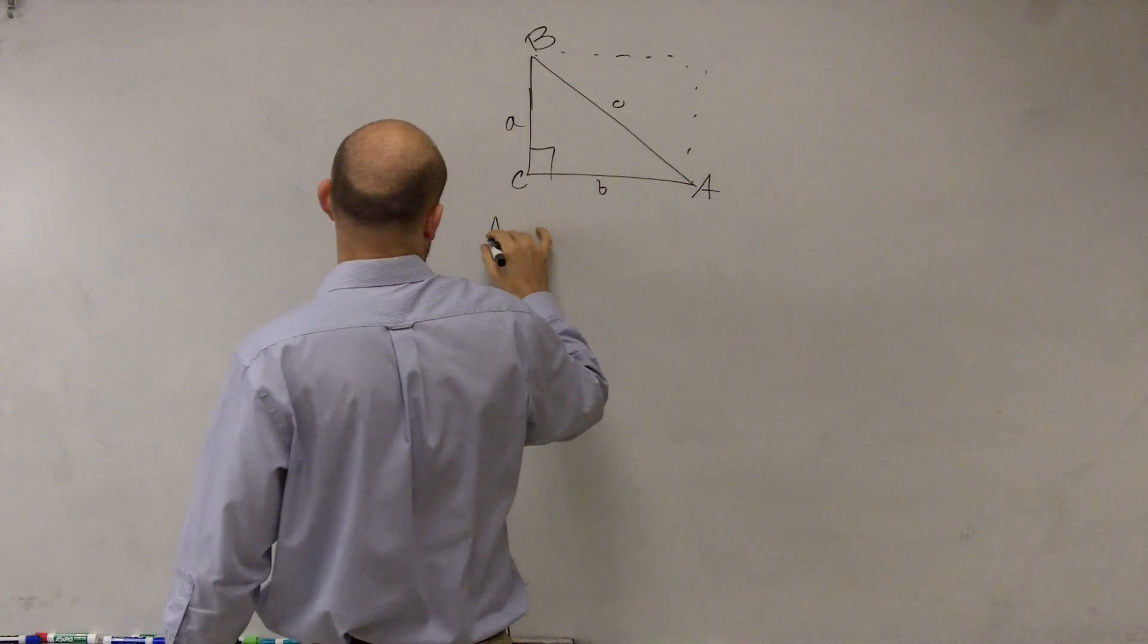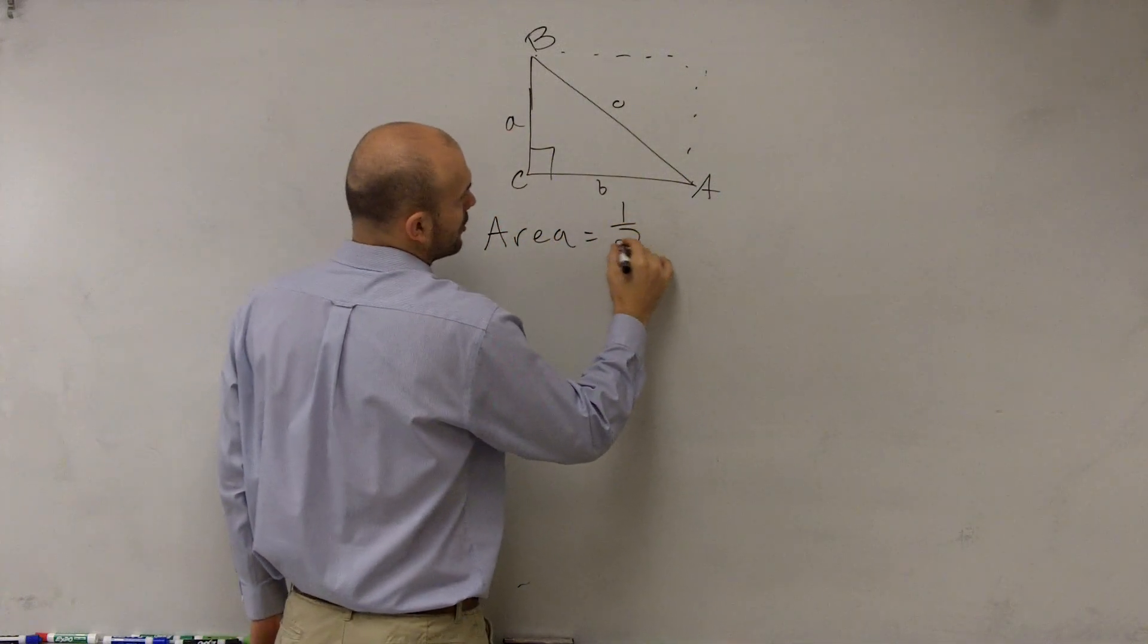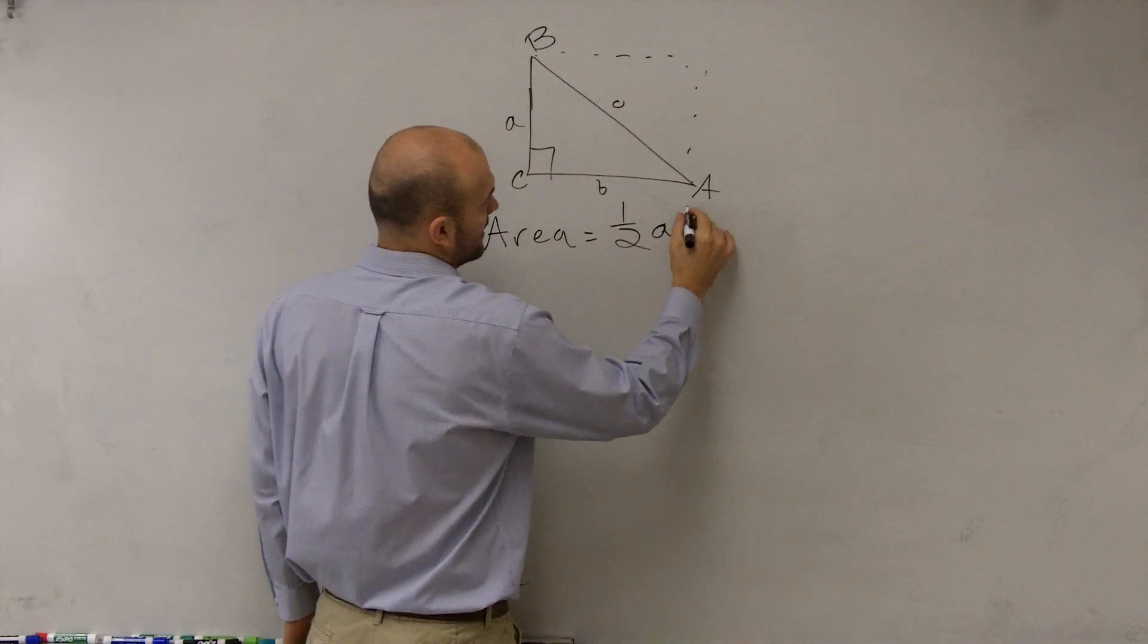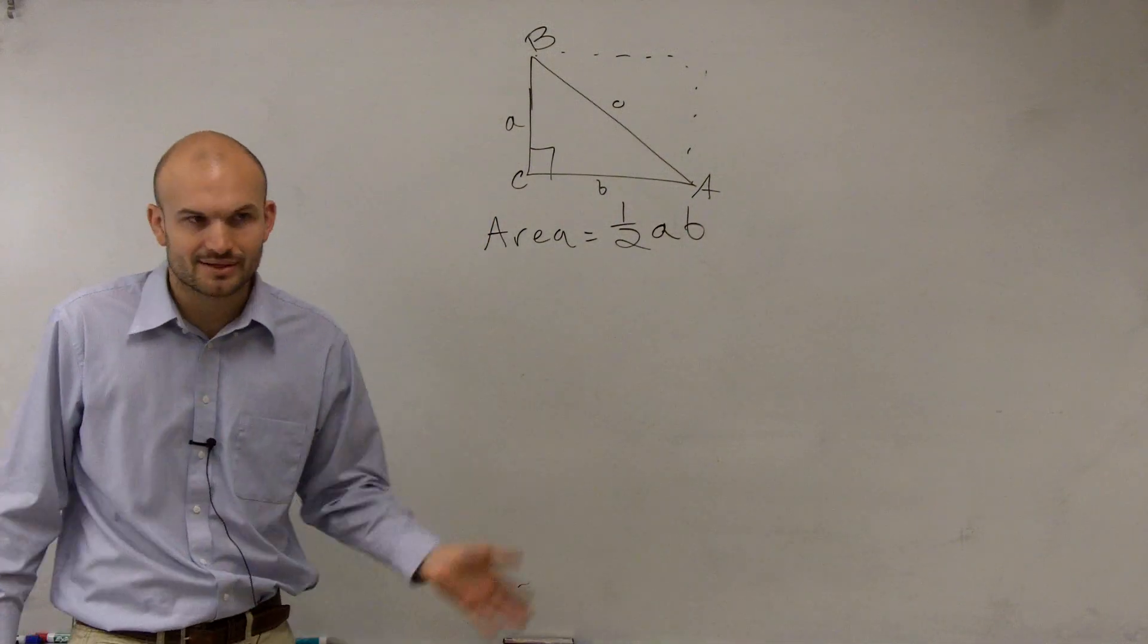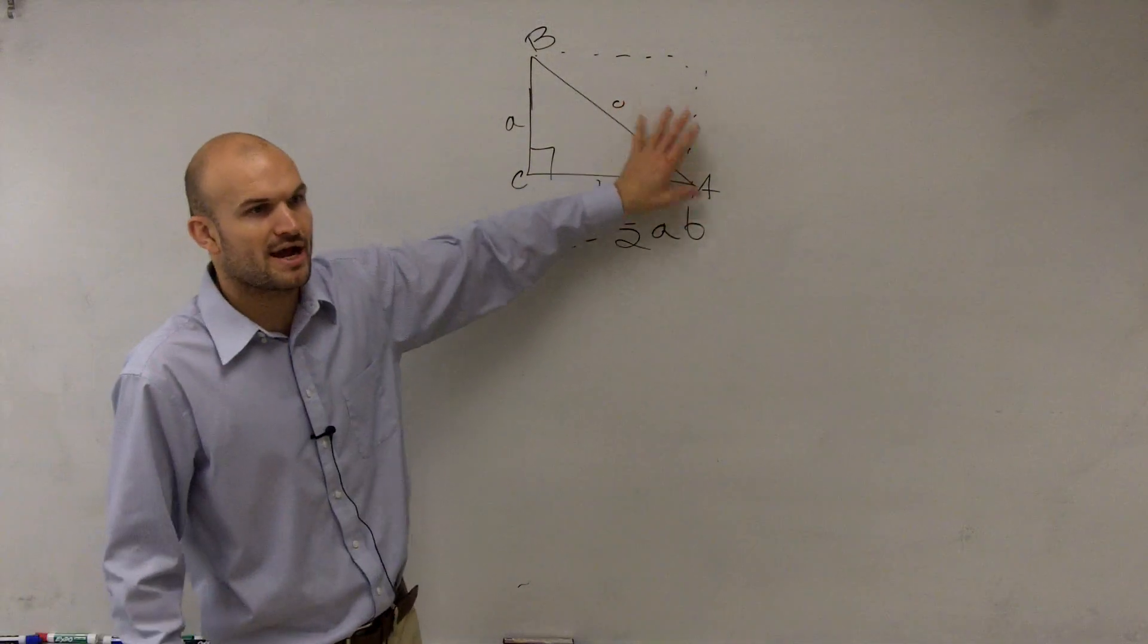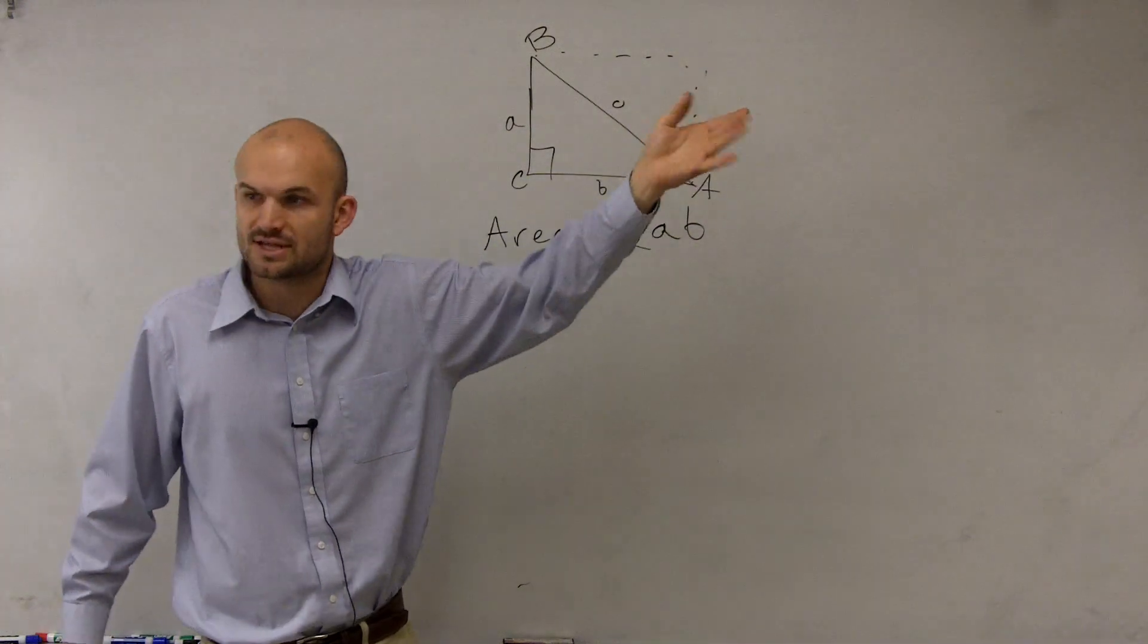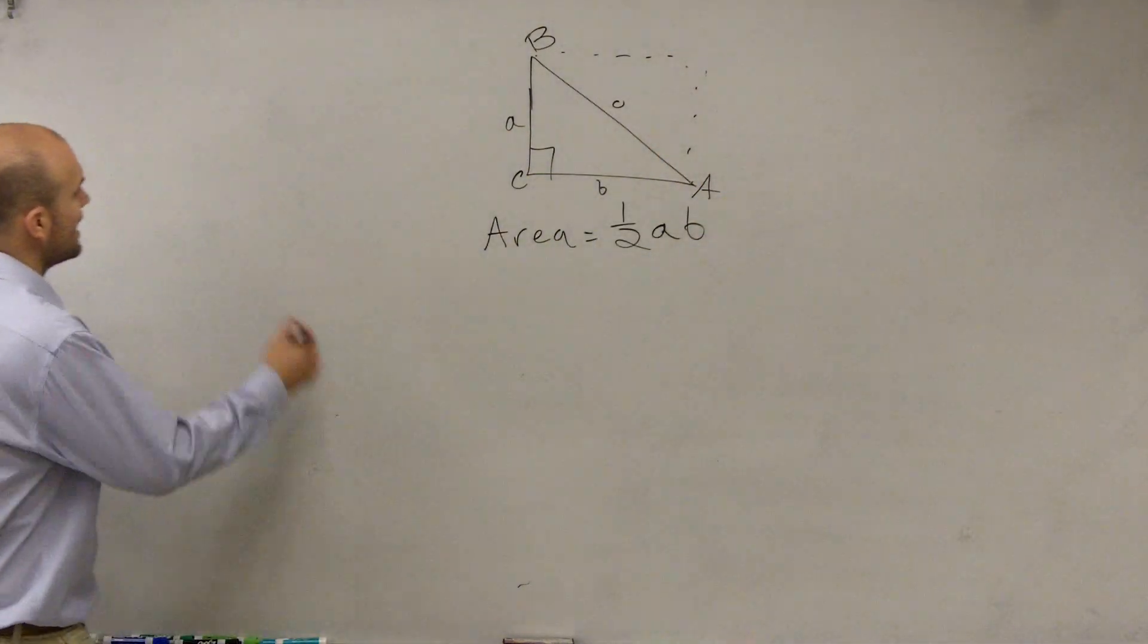So I could say the area of this is going to be one half A times B, which would be your length times height, base times height, whatever, length times width. Either way you want to look at it, right? But you know triangle is half of a rectangle, rectangle is length times width, right? Good.